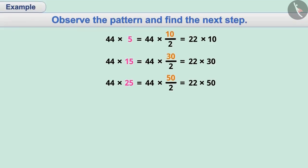Observe the below pattern and find the next step. Let's understand the first step. Here, 5 is expressed as 10 by 2. That is, it is expressed in the form of a fraction whose value is 5. Then, 44 is divided by 2 and the quotient is multiplied by 10. We followed a similar pattern for the multiplication of 15 and 25.